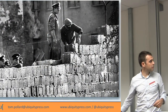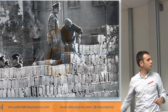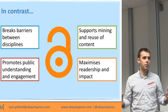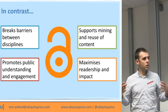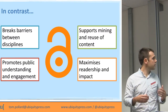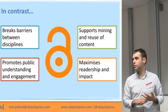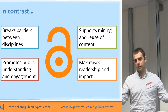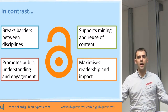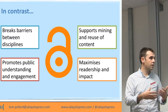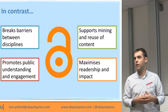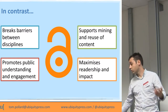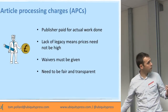If you don't have the money, you're behind — you're on the wrong side of the wall. In contrast, open access can break down barriers between disciplines. It means you can access content you wouldn't otherwise be able to access. It promotes public understanding and engagement. With open licenses, people start gathering data, analyzing it, and reusing it in ways not possible under closed licenses, and it maximizes researcher readership and impact.